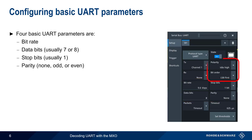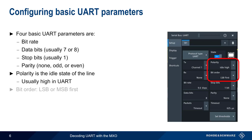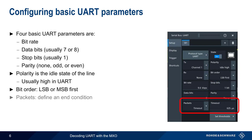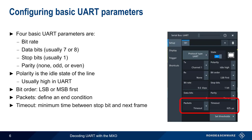The next group of parameters includes the polarity of the line, which is typically idle high, and whether data is being sent with the most or least significant bit first. The last set of parameters are related to the end of the UART frame. Packets can be used to define the end condition of a frame, such as a carriage return or line feed character, instead of the standard timeout. The timeout pattern defines the minimum time between the stop bit and the start of the next UART frame.